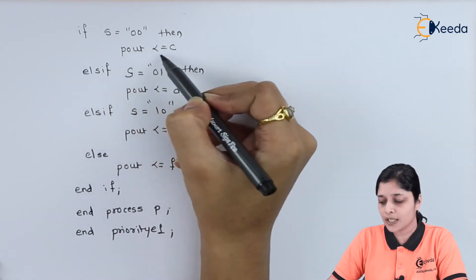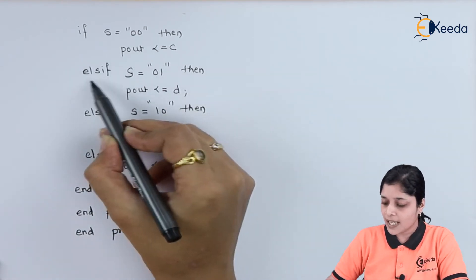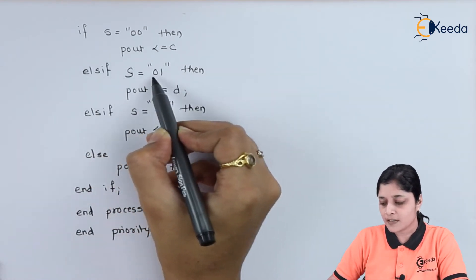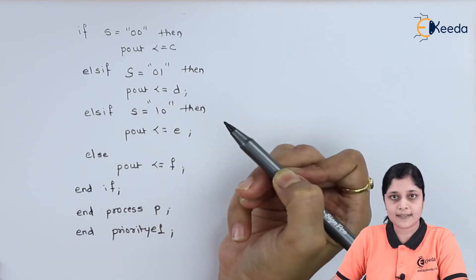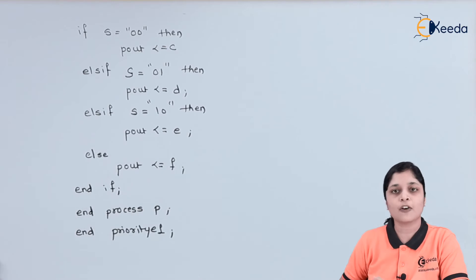then only you can get the output as C according to the logic diagram we have mentioned. Else if we have to write here 01, you will get output as D. Else if S is equals to 10, you are getting output as E.